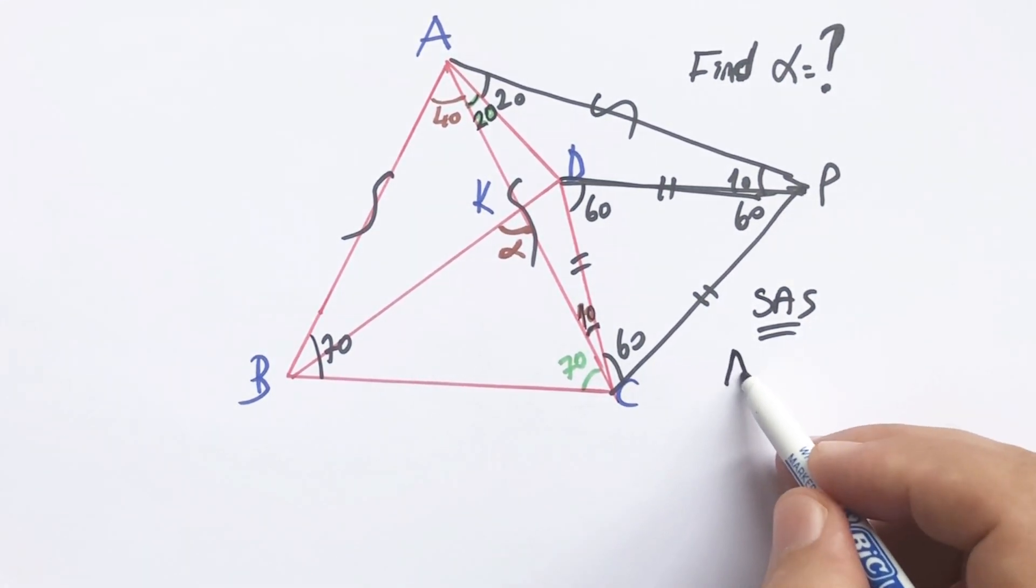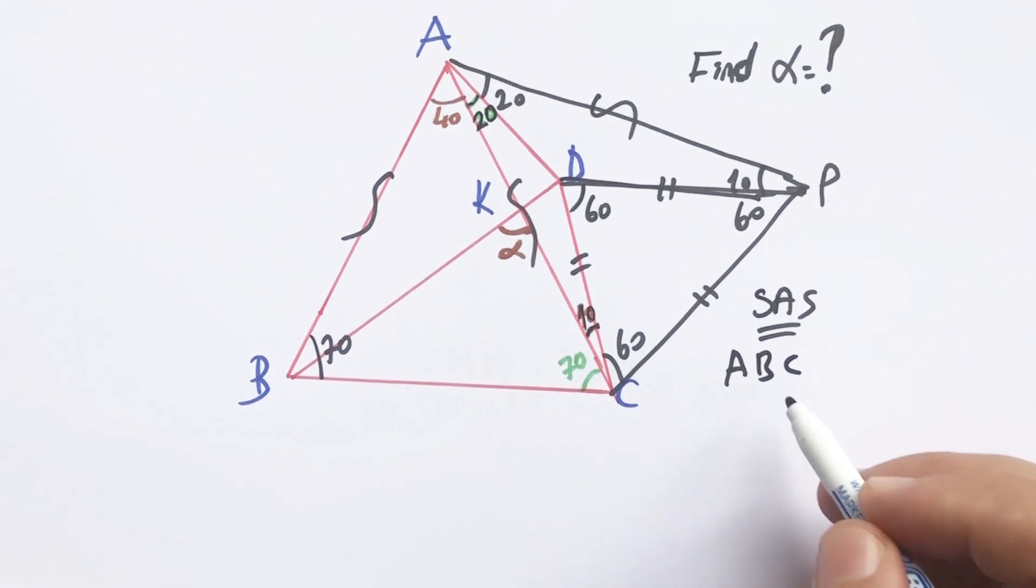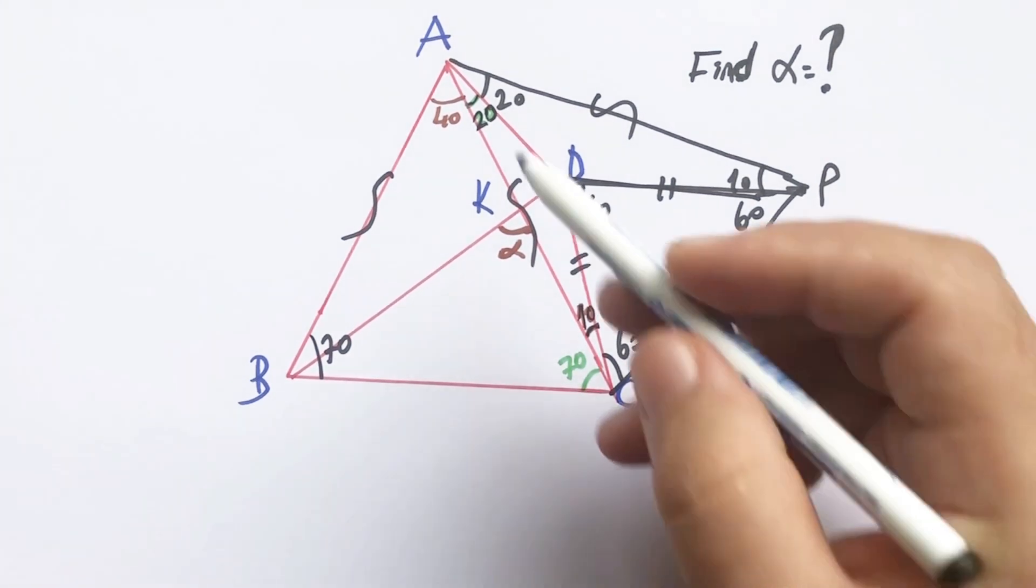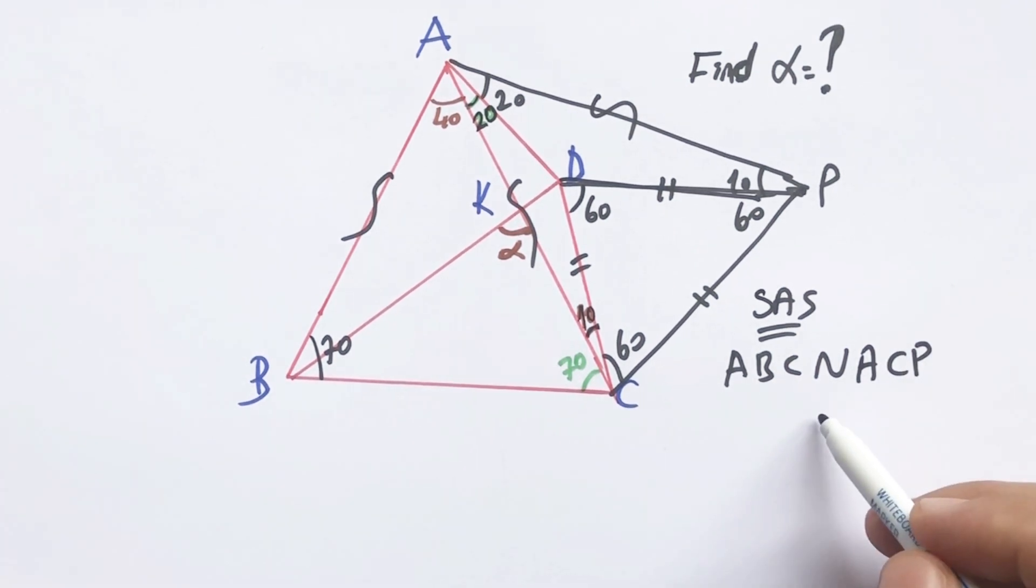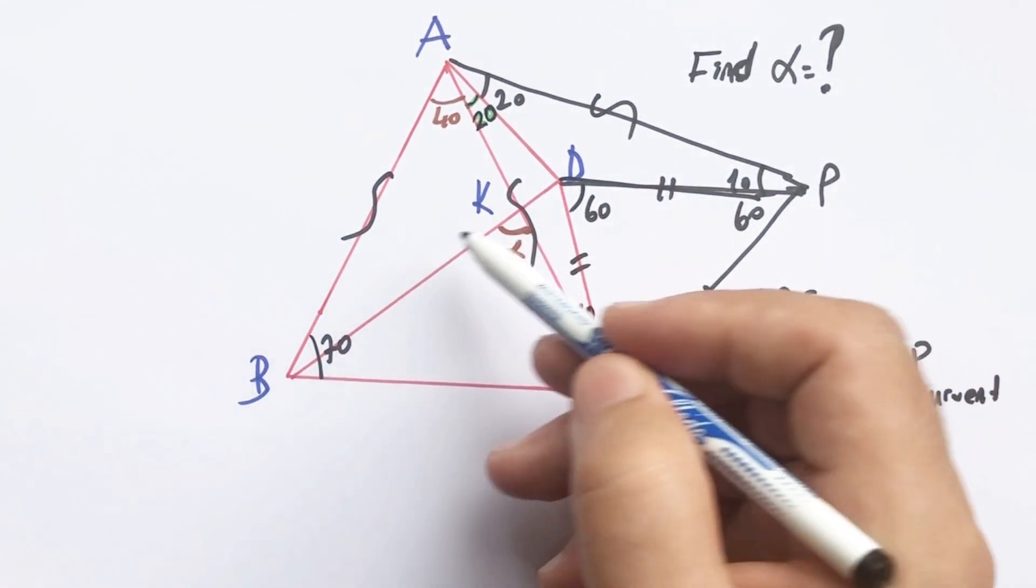ABC triangle and ACP triangle are congruent because they have same sides and angles which are between the same sides.